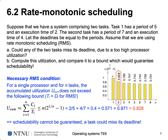We have a necessary condition for Rate Monotonic Scheduling on a single processor: for n tasks, the accumulated utilization must not exceed n times the nth root of 2 minus 1. For two tasks, this bound on the right-hand side is 0.828. On the left-hand side we calculate the utilization given our assumptions: 2 every 5 and 4 every 7.